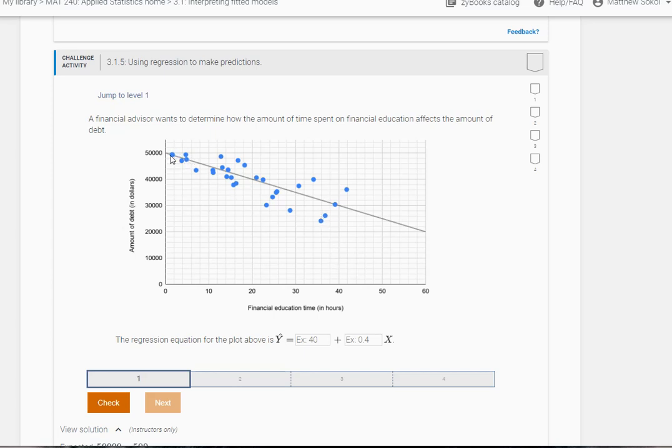So what this problem wants you to do is find the equation of this regression line here. To find the equation of the line you need two things: the intercept and the slope.